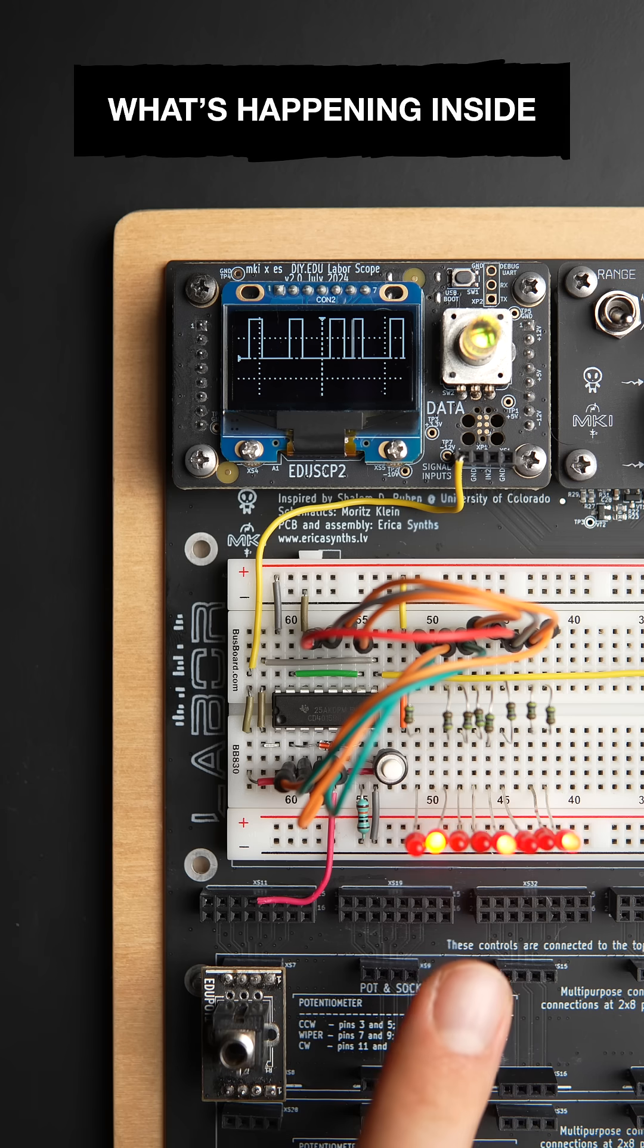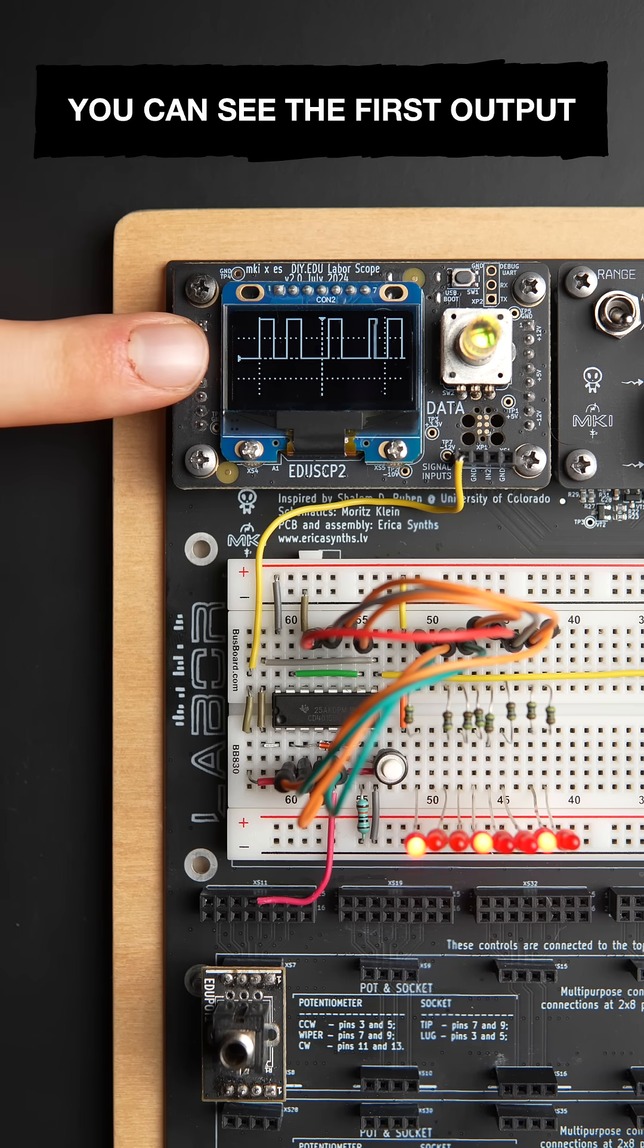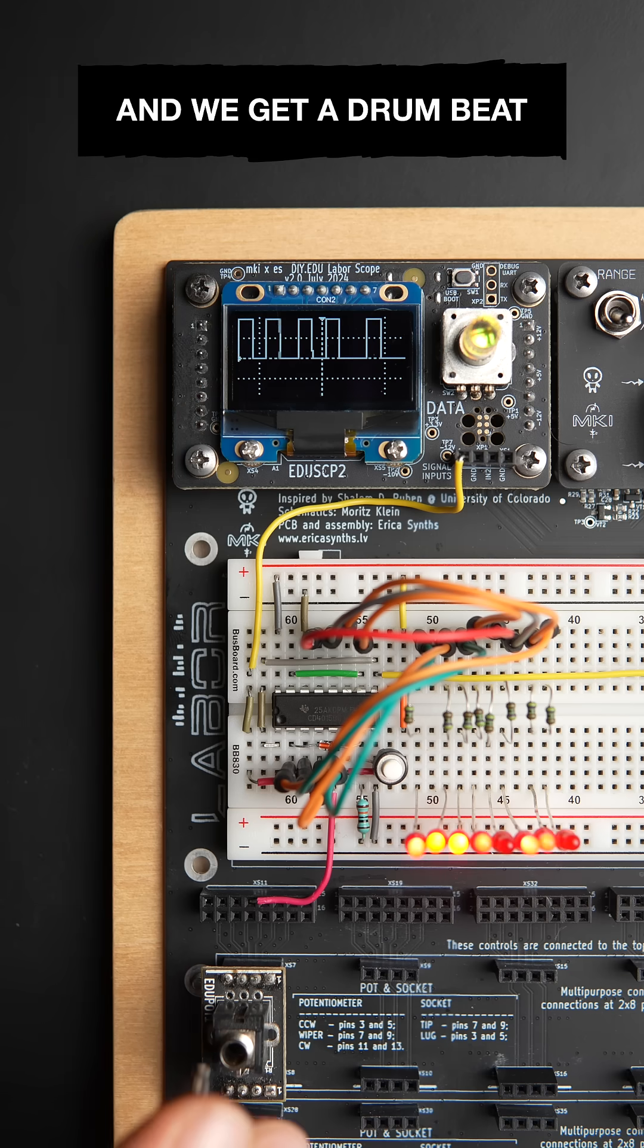These LEDs show what's happening inside the register. On the oscilloscope, you can see the first output playing back what I tapped in. Connect that to a drum voice, and we get a drum beat.